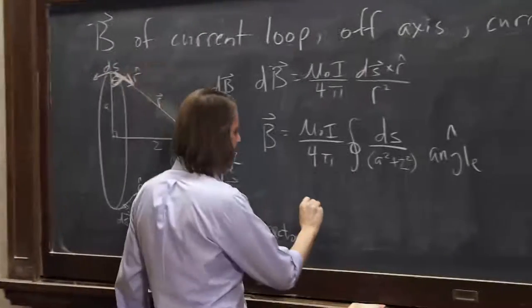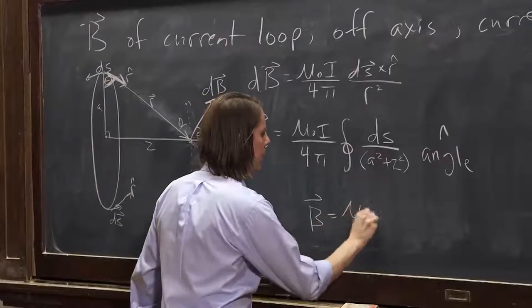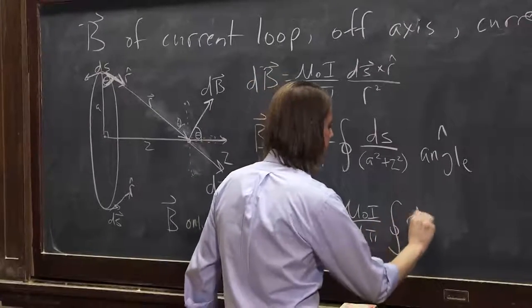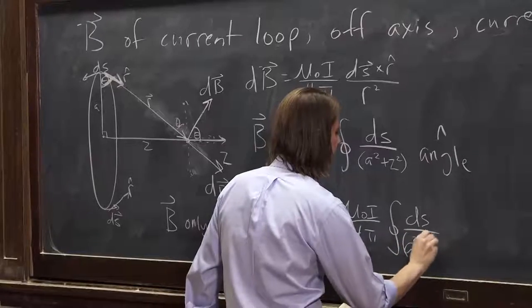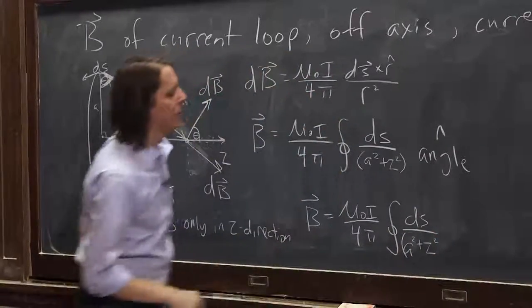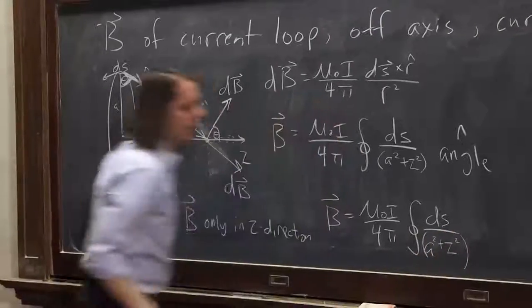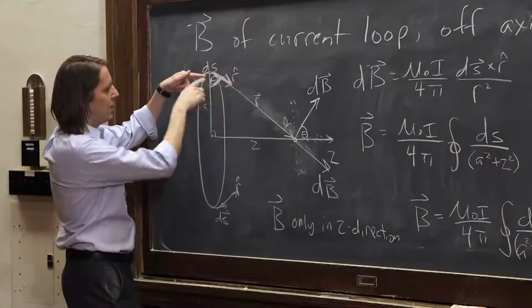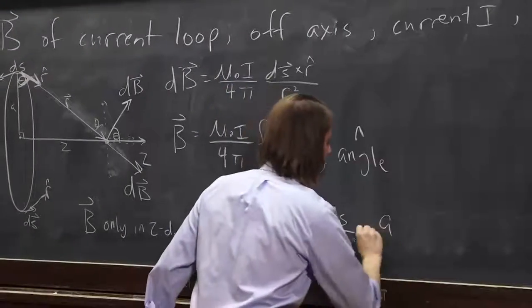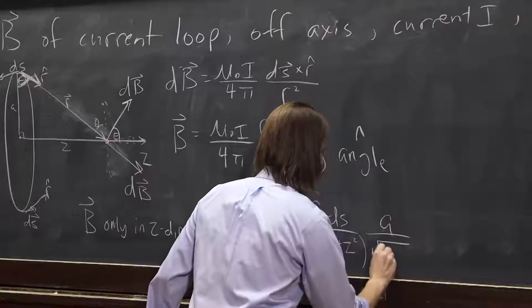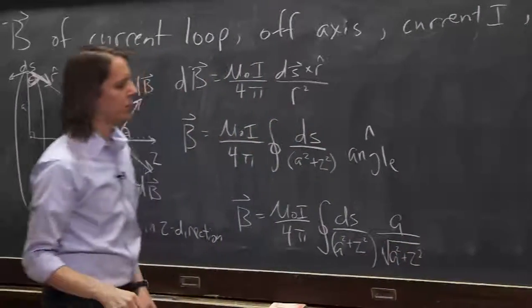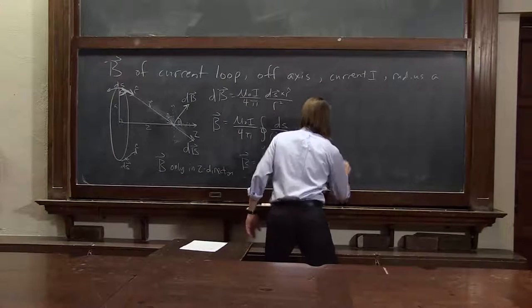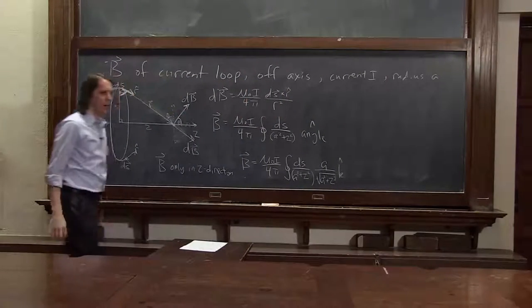Let's go ahead and write it then. B equals mu naught I over 4 pi integral around the circle of dS over a squared plus z squared. And now we know we need this cosine component. Cosine of this angle is adjacent a over hypotenuse. A over the square root of a squared plus z squared. And now that we have that component, we know it's in the k hat direction.